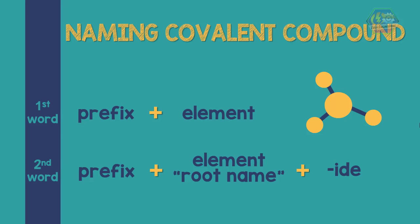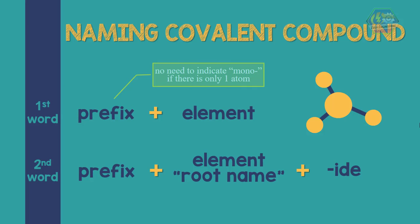The first word can have a prefix if it has more than one atom, which means there is no need to indicate 'mono' if there is one atom for the first word.